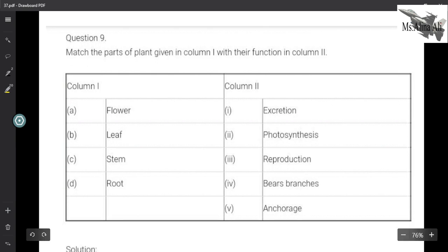Question 9 says match the parts of the plant along with their function. So flower will go for reproduction because that has male and female parts which are involved in reproduction. Leaf is basically involved in making food and that process is known as photosynthesis. After that we have stem. Now what does stem do? It bears the branches, fruits, etc.